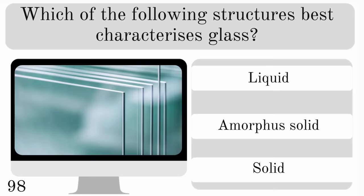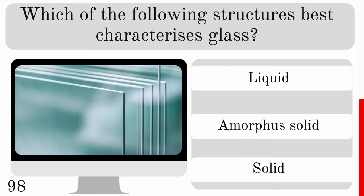Which of the following structures best categorises glass? Is it a liquid, an amorphous solid or a solid? It is an amorphous solid.